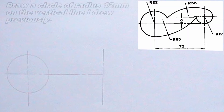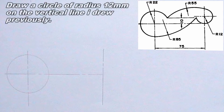Now I will draw the circle on the vertical line I drew previously. The radius of the circle should be 12mm, and the circumference of the circle should pass through the point where the vertical line intersects the horizontal line.